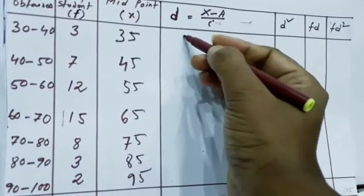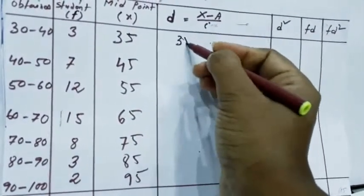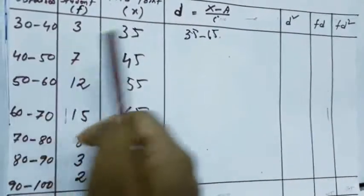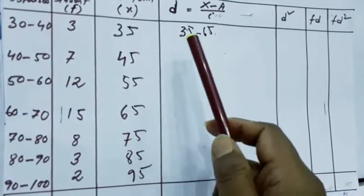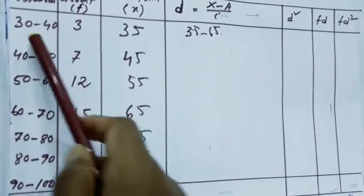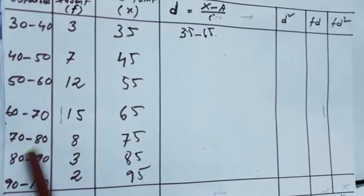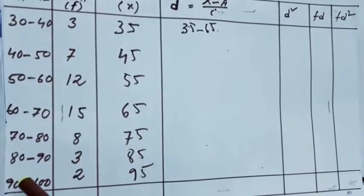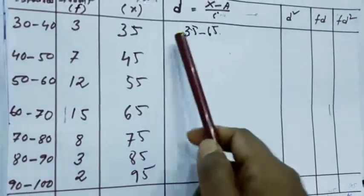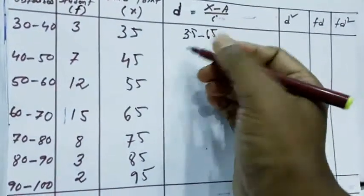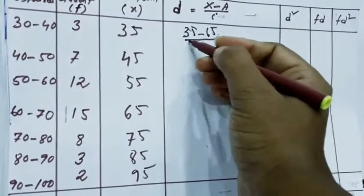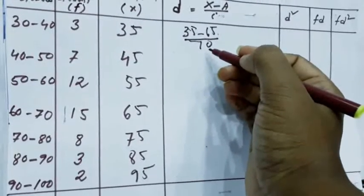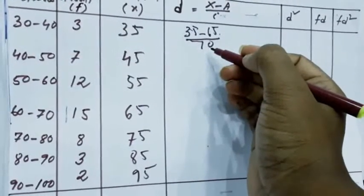So, it is 35 minus 65. Now, I will change the scale. Here, see, gap is only 10, always, if all the gaps are same, we can scale down it also. So, 35 minus 65, from each and every observation, I will divide it by 10, and later on, in the formula, I will compensate it by multiplying 10.